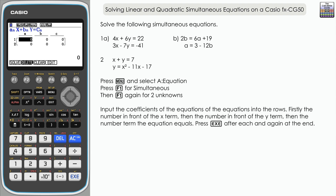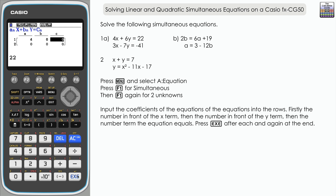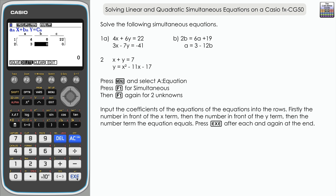The first row, first column is the number in front of x in the first equation, which is 4. Then 6 for y, and 22 in the last column. The second row is the second equation: 3 for x, minus 7 for y, and negative 41.